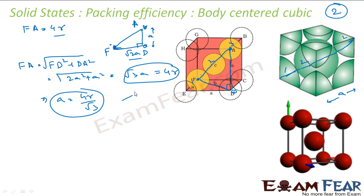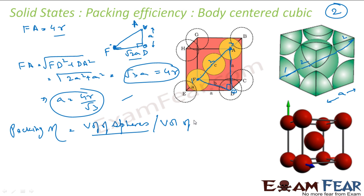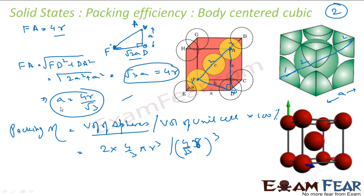Now I can find the packing efficiency for BCC. Packing efficiency = (volume of spheres / volume of unit cell) × 100. There are 2 spheres, so: [2 × (4/3)πr³] / a³, where a = 4r/√3, so a³ = (4r/√3)³. Solving this gives 68%. So packing efficiency in BCC is 68%, slightly less than FCC which is 74%.